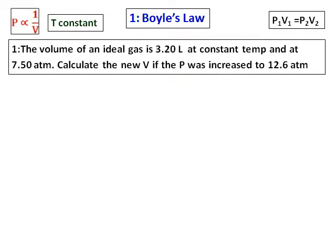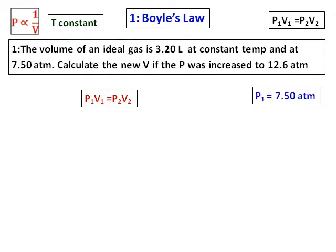The first question: the volume of an ideal gas is 3.20 litres at constant temperature and at 7.50 atmospheres. Calculate the new volume if the pressure is increased to 12.6 atmospheres. Use the formula P1V1 = P2V2. P1 is 7.5 and P2 is 12.6.